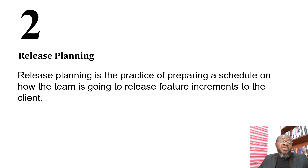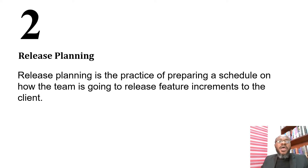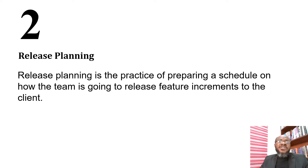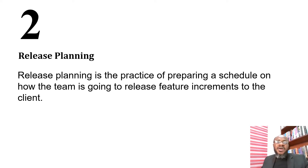For some scrum projects, the team may decide to release after every sprint. Other teams may decide to combine one, two, or three sprints before releasing to the client. Much of that is informed by how the client wants value to be delivered. On Kanban projects that are feature-driven, releases are done on a need basis. The client communicates how they want features to increment through the product owner, who then ensures releases are done by that rhythm.